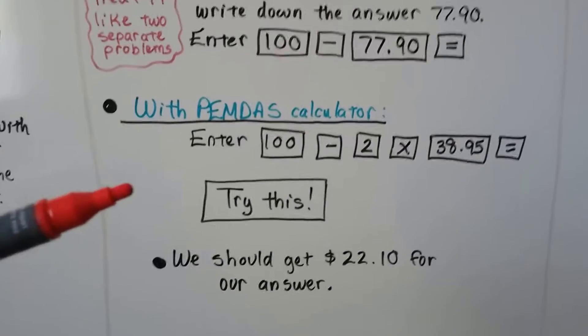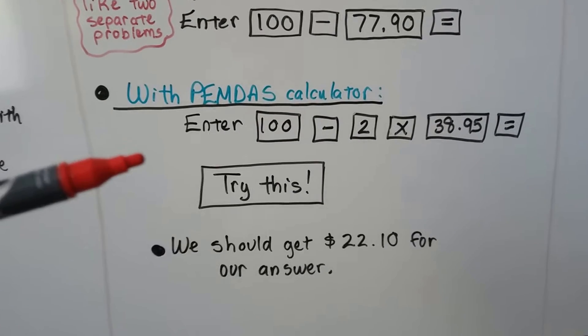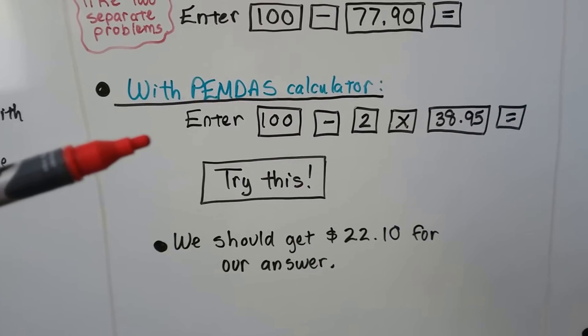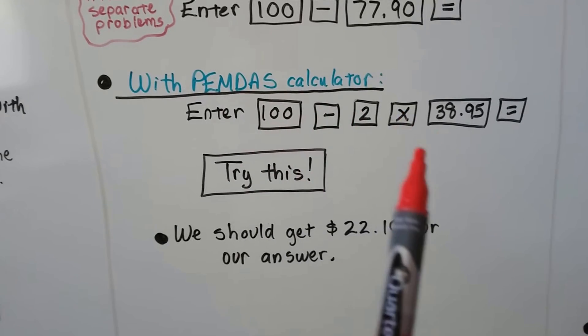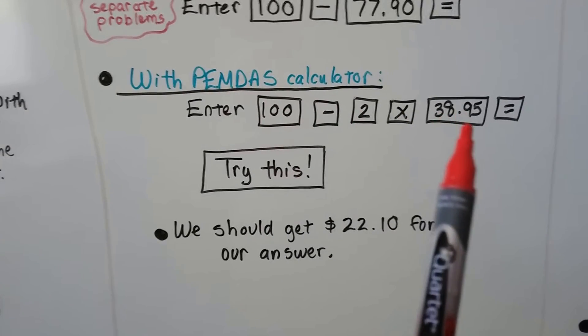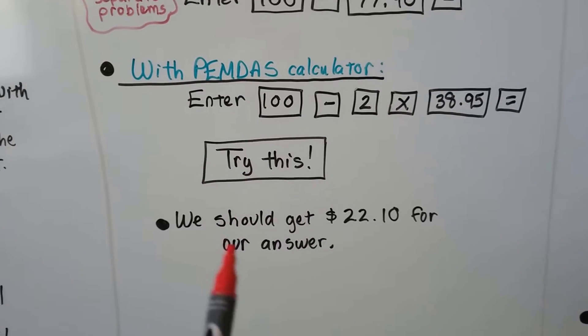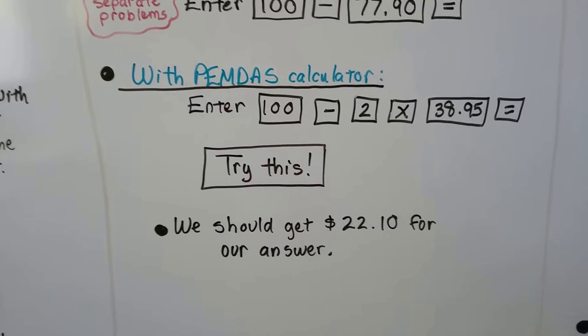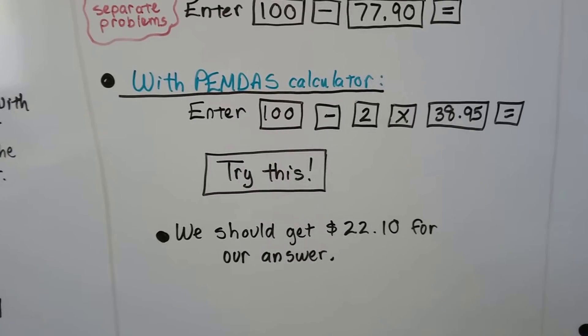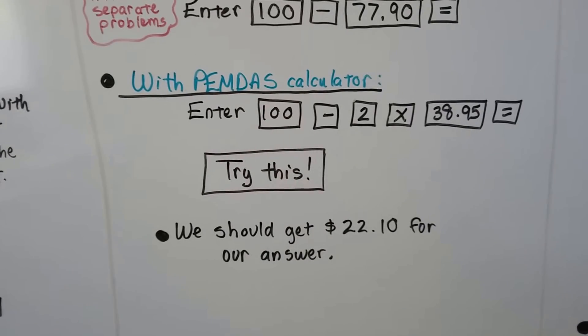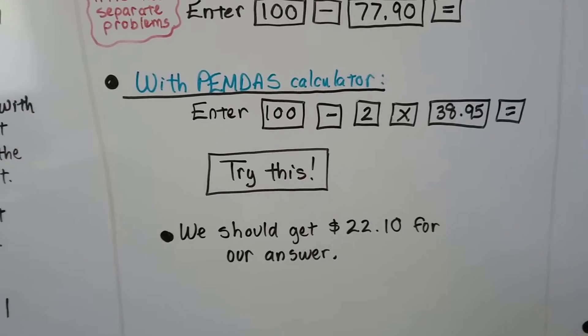Now, if it does have the PEMDAS, the order of operations, programmed into the calculator, you're just going to be able to hit 100 minus 2 times 38.95 equals, and you'll get a $22.10 as an answer. So, hopefully, it will be programmed for order of operations because it will make your life easier.